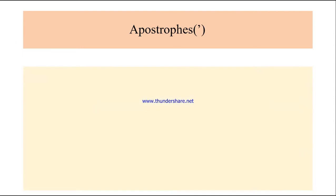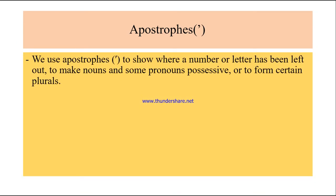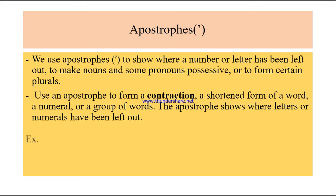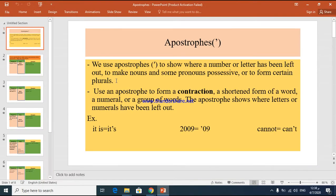Good afternoon students. Today we're going to talk about apostrophes. An apostrophe is this sign. We use apostrophes to show where a number or letter has been left out, to make nouns and some pronouns possessive, or to form certain plurals.